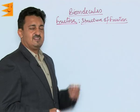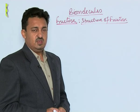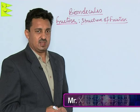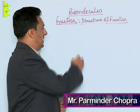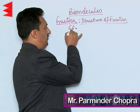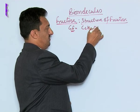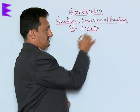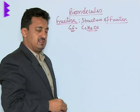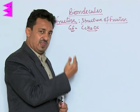Let us see the structure of fructose. Fructose is a monosaccharide with the general formula C6H12O6. After doing the same series of reactions, it was concluded that the spatial straight-chain arrangement structure of fructose is as follows.